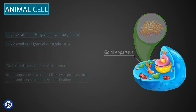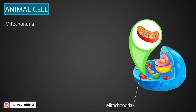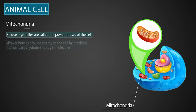Next is the mitochondria. These organelles are called the powerhouses of the cell. They provide energy to the cell by breaking down carbohydrates and sugar molecules.